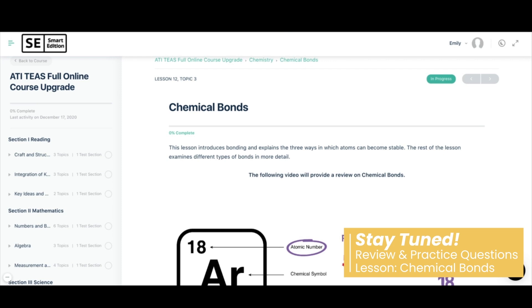If you're already studying for the ATI TEAS, you know that the science section will comprise of A&P, biology, and chemistry questions. Because of this, this video is actually part of our four-part series all about refreshing our knowledge on chemistry.